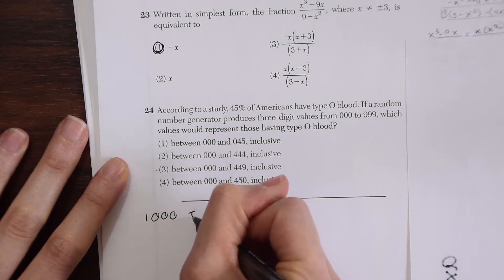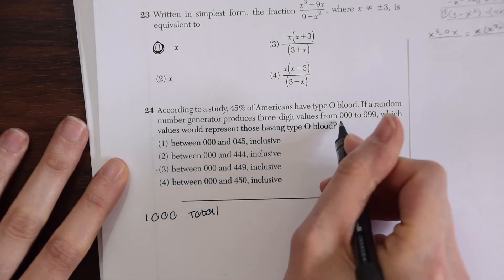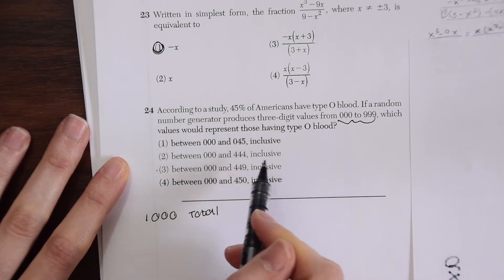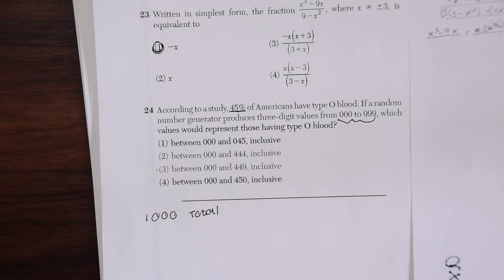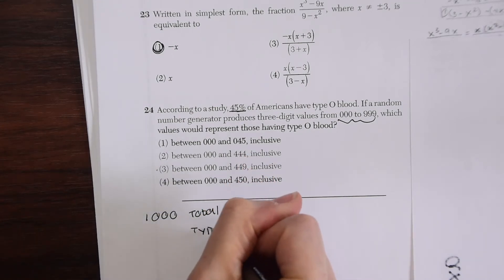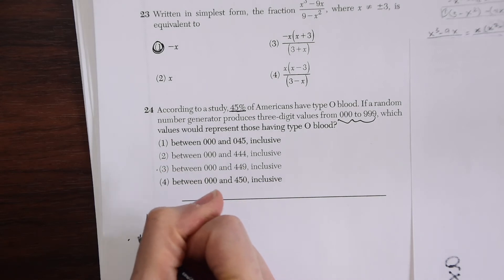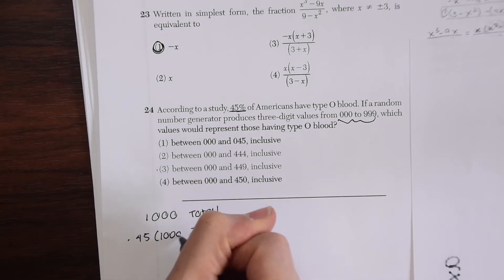If we have 000 to 999 that means we're going to have 1000 total random people, right? So 1000 total. That's what's represented here. And now which values represent having type O? We know that 45% of people have type O. So if we want type O we need 45% of 1000 which is going to be equal to 450.